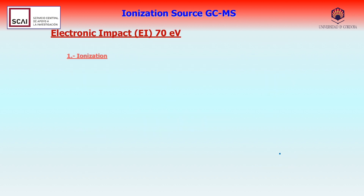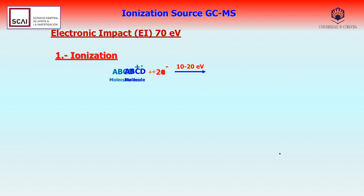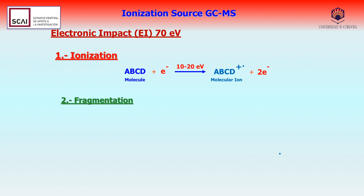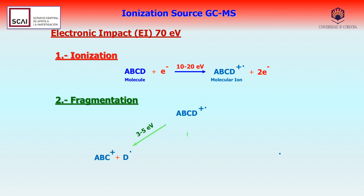In the case of gas chromatography coupled with mass spectrometry, or GC-MS, the most widely used ionization source is the electronic impact at 70 electron volts (EV), where both ionization and fragmentation of the molecules take place.